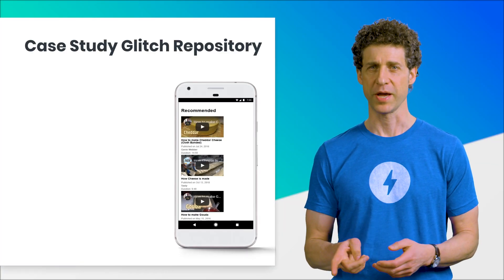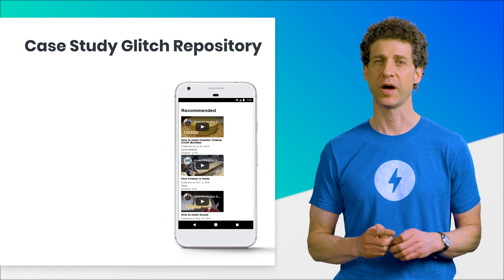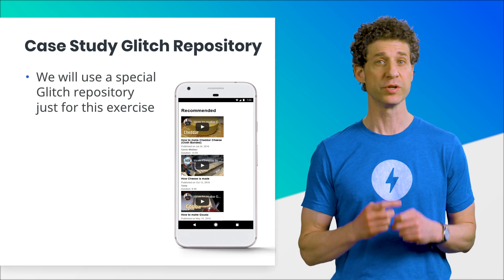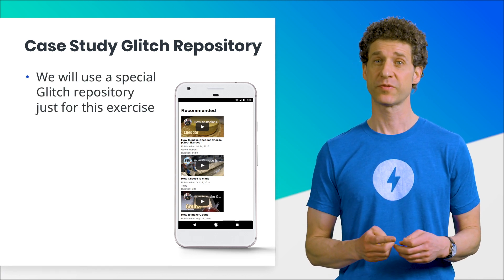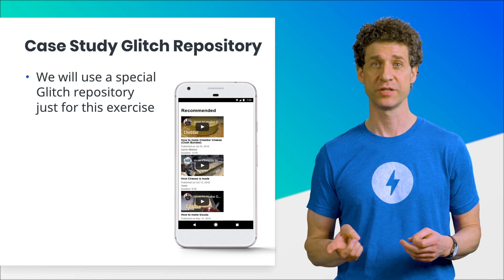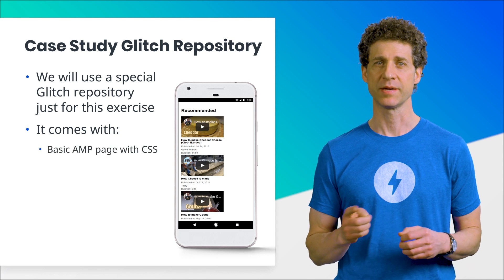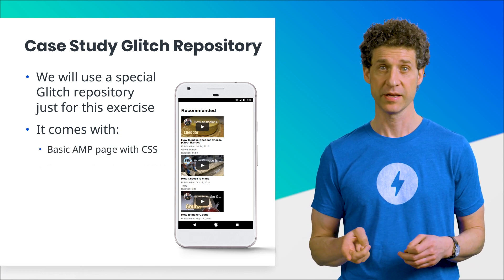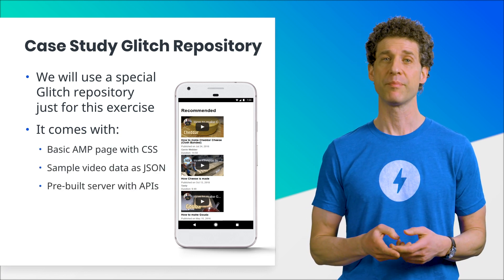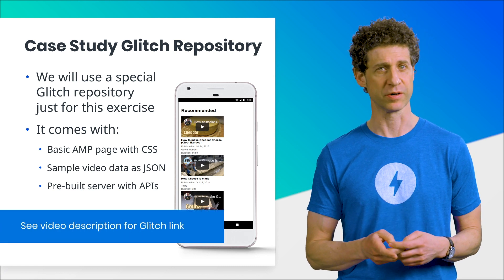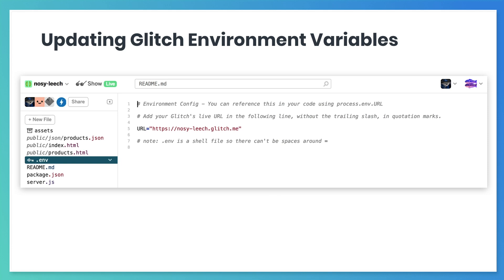We're not going to build this product page inside our Chico's Cheese Bikes project. Instead, we'll use a special Glitch repository just for this exercise. The link is in your video description. This Glitch comes with CSS, HTML, and the AMP boilerplate, some sample video data, and a pre-built server that conveniently returns recommended videos. You don't have to edit the server to complete this exercise, but for the server to work, you will have to follow the brief instructions in the readme of your Glitch repo.